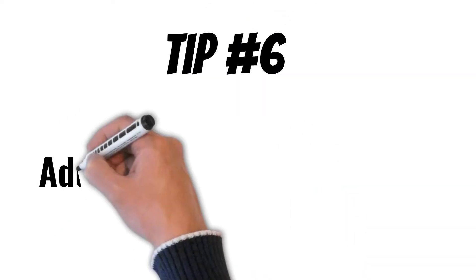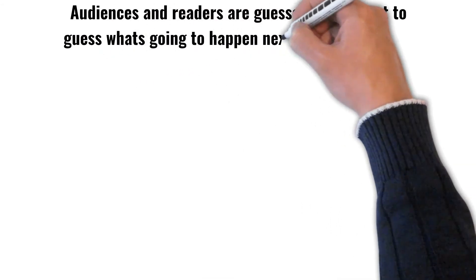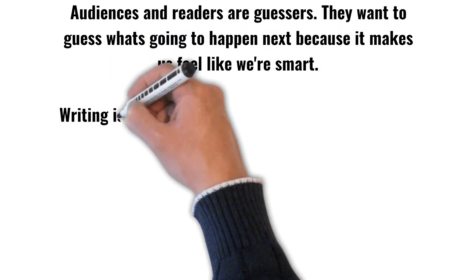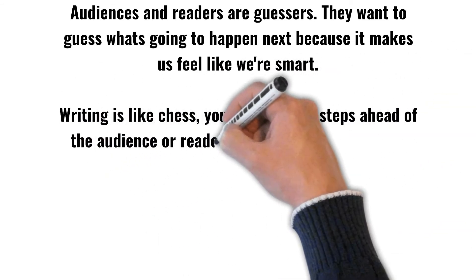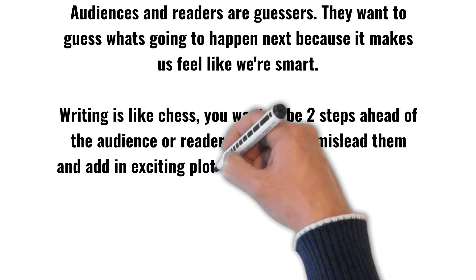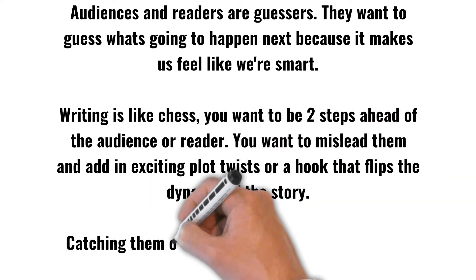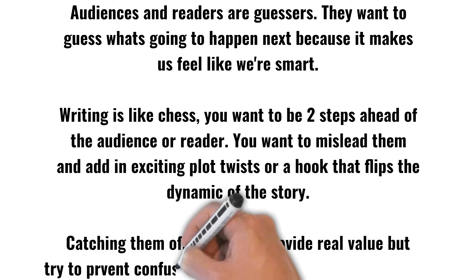Tip number 6: add a hook or a plot twist. Audiences and readers are guessers — they want to guess what's going to happen next because it makes them feel smart. Writing is like chess; you want to be two steps ahead of the audience or the reader. You want to mislead them and add exciting plot twists or a hook that flips the dynamic of the story, catching them off guard. But try to prevent any confusion to the audience or the reader.